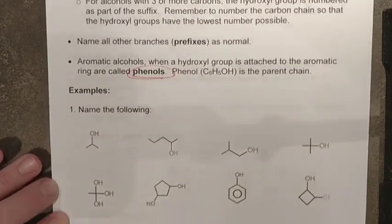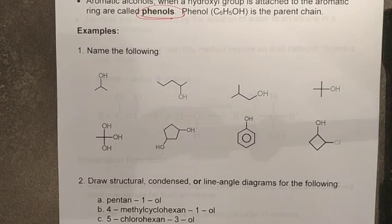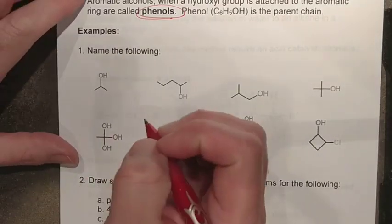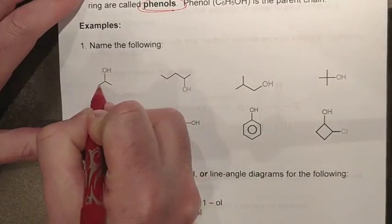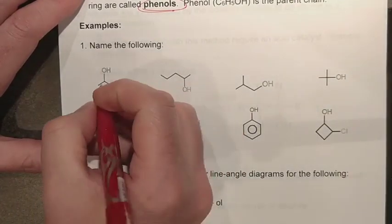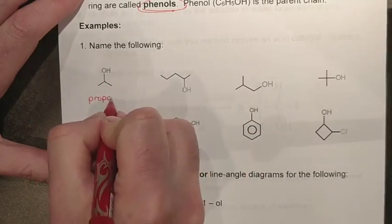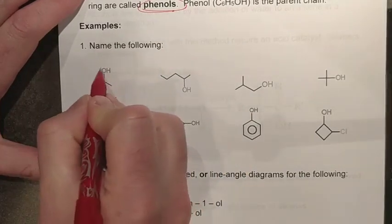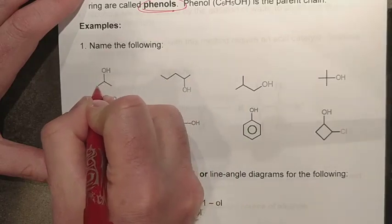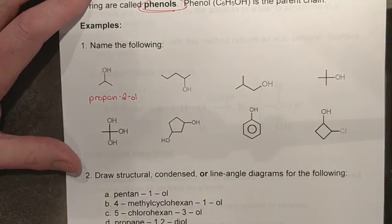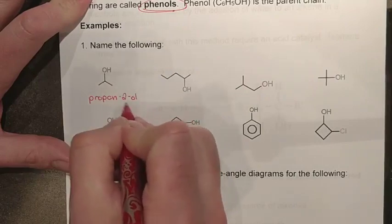Let's put this into practice. You're looking for the longest continuous chain with the OH group attached, then name and number the hydroxyl group and any other branches. In this line-angle structure we have three carbons - so the root is 'prop'. They're all single bonded, so it's propane. We have a single OH group in the middle, and since it's longer than two carbons, we indicate its position: this becomes propan-2-ol.